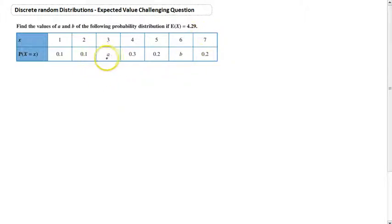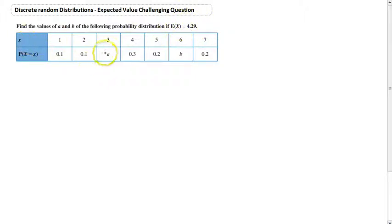Obviously we don't know A and B. The question asks us to find the values of A and B of the following probability distribution if the expected value is equal to 4.29. So we know the expected value, but we have two unknowns. This question gets a little bit complicated — there's a simultaneous equation that pops up in here somewhere.